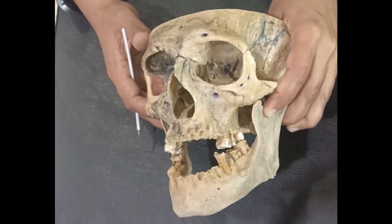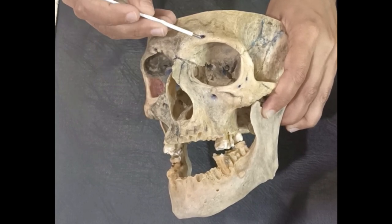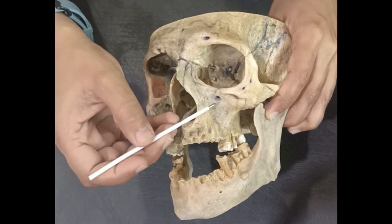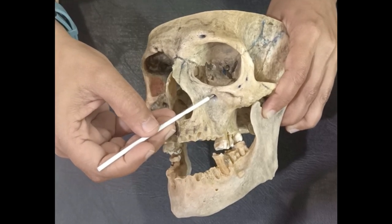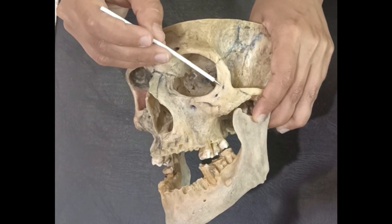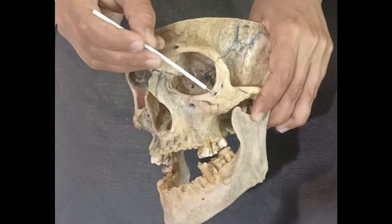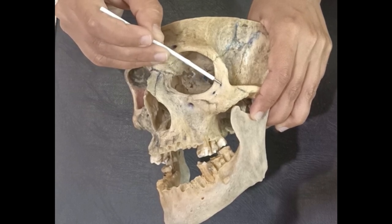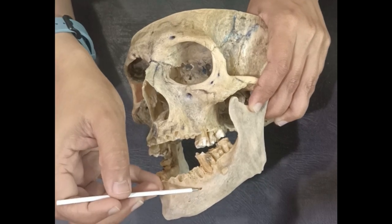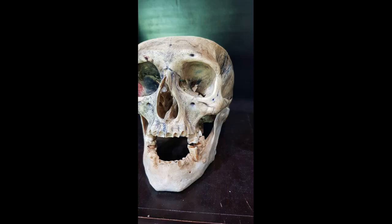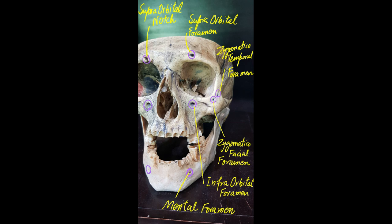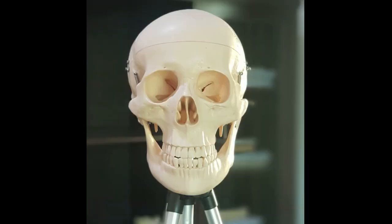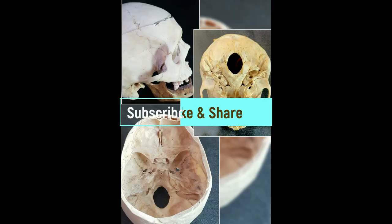Now let me repeat the foramina of the Norma frontalis. The supraorbital foramen, the infraorbital foramen, two foramina on the zygomatic bone — the zygomaticofacial foramen and the zygomaticotemporal foramen — and the mental foramen. That's all about the Norma frontalis. In my next video, I will talk about Norma lateralis, Norma basalis, and the interior of the skull.